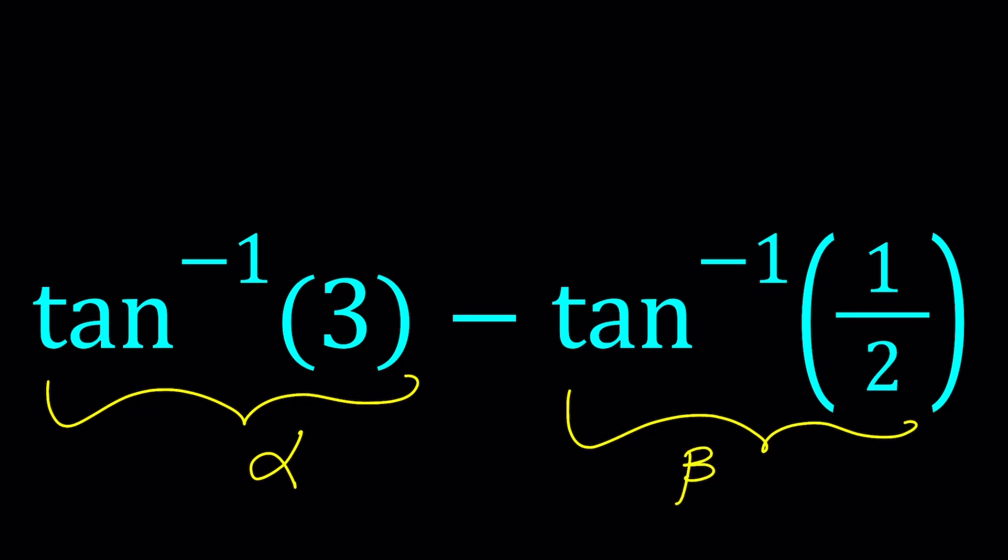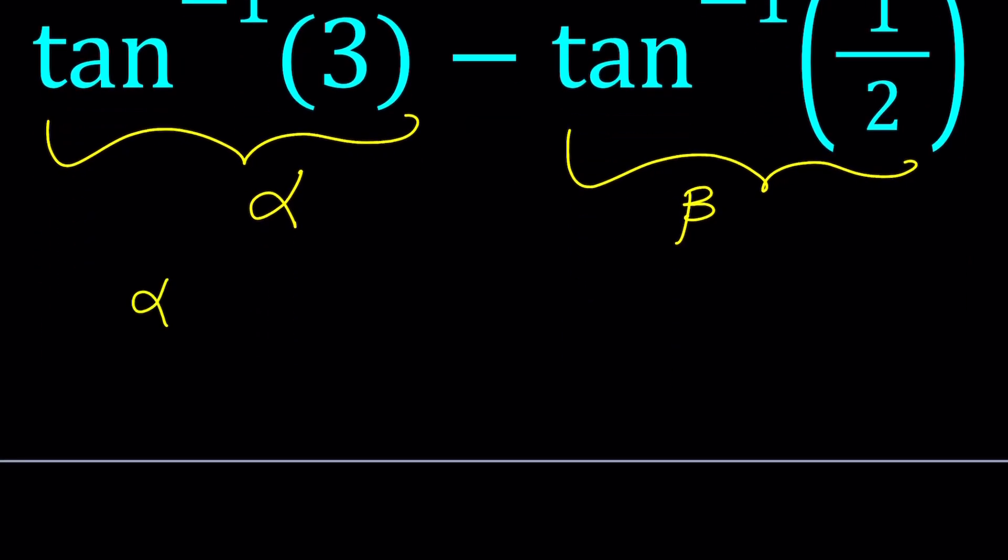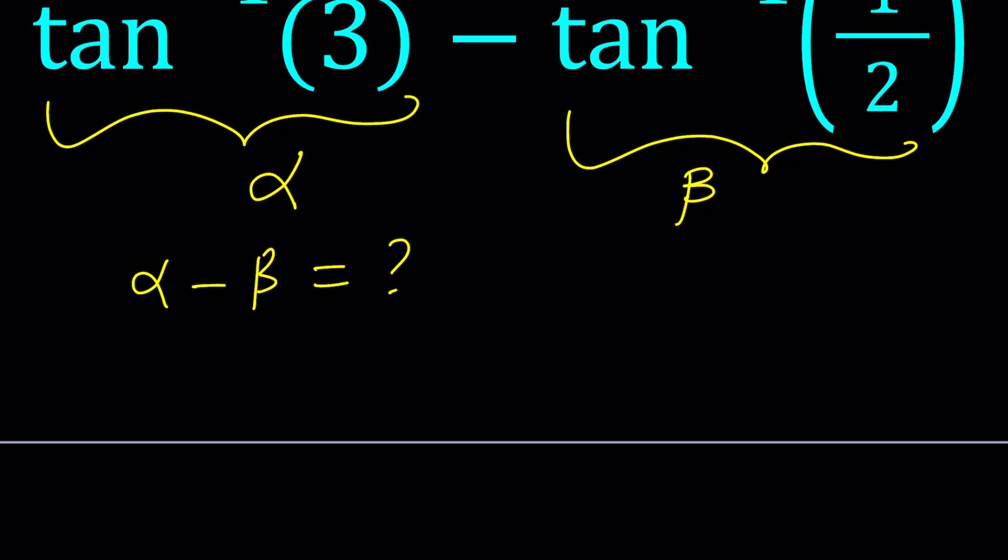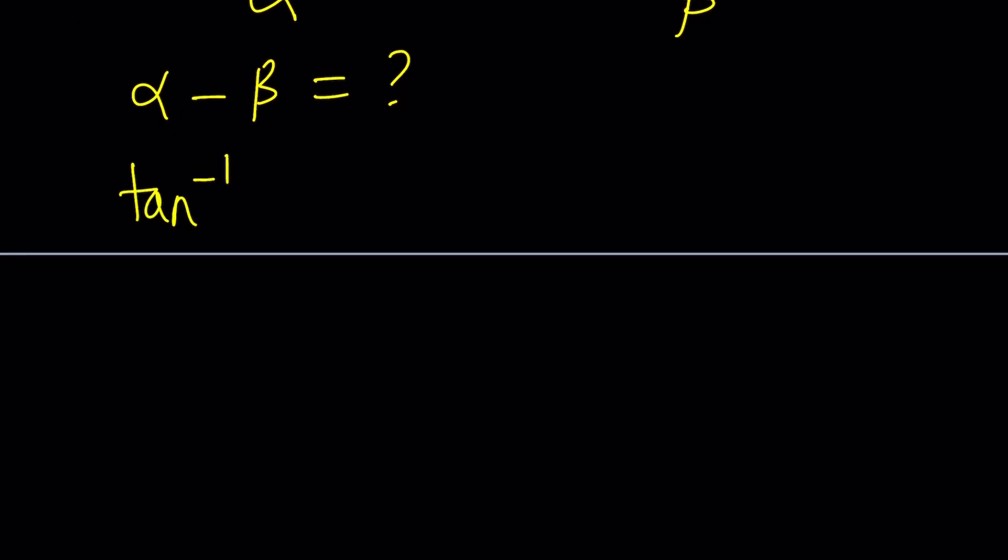Because tan inverse of 3 basically represents an angle whose tangent equals 3, right? Well, we've got to be careful because there is something we need to talk about, which we'll do towards the end of the first method. So now we're looking for alpha minus beta. But what does tangent inverse of 3 being equal to alpha mean? Let's go ahead and write that down as an equation. That's what you usually do first. So tan inverse of 3 equals alpha. If we tan both sides, that's going to give us tangent alpha is equal to 3. So that's basically what it means.